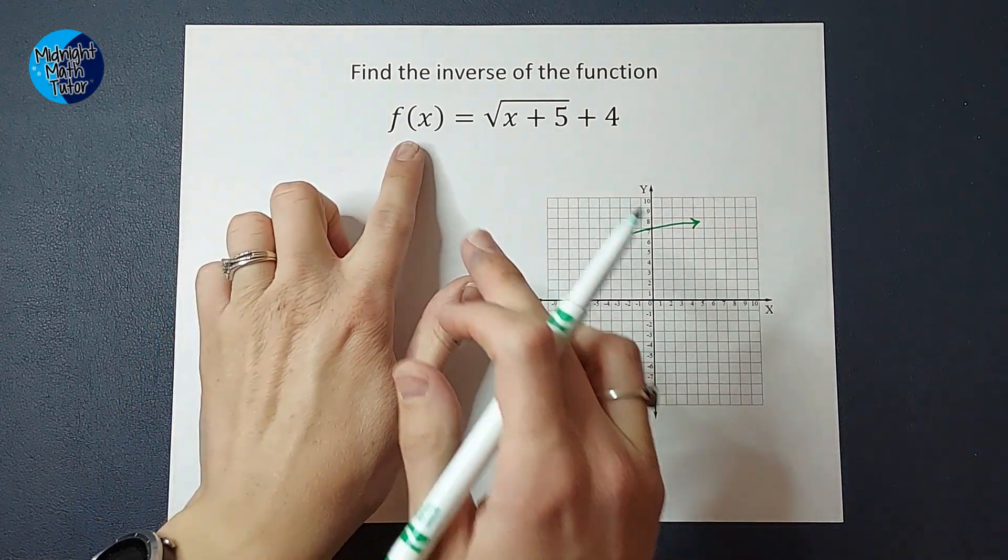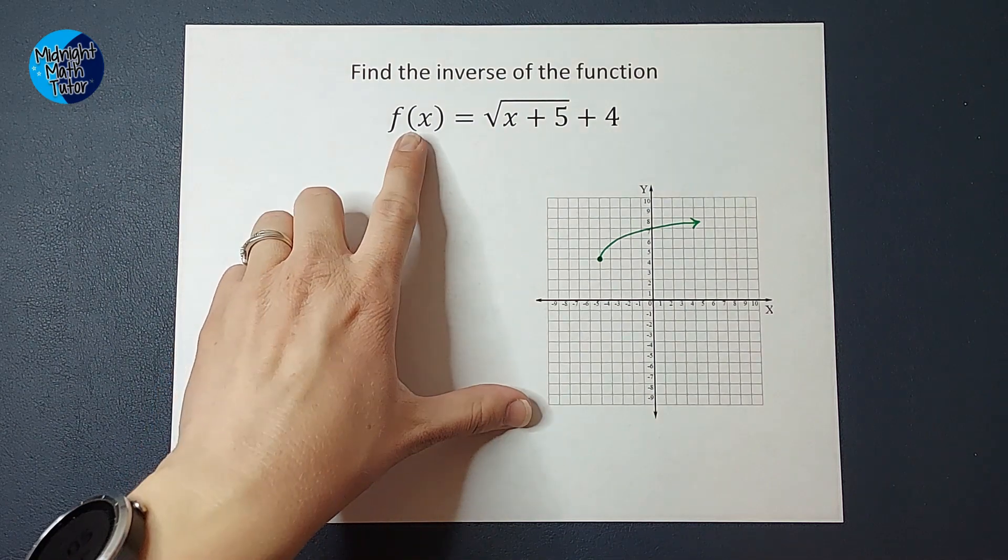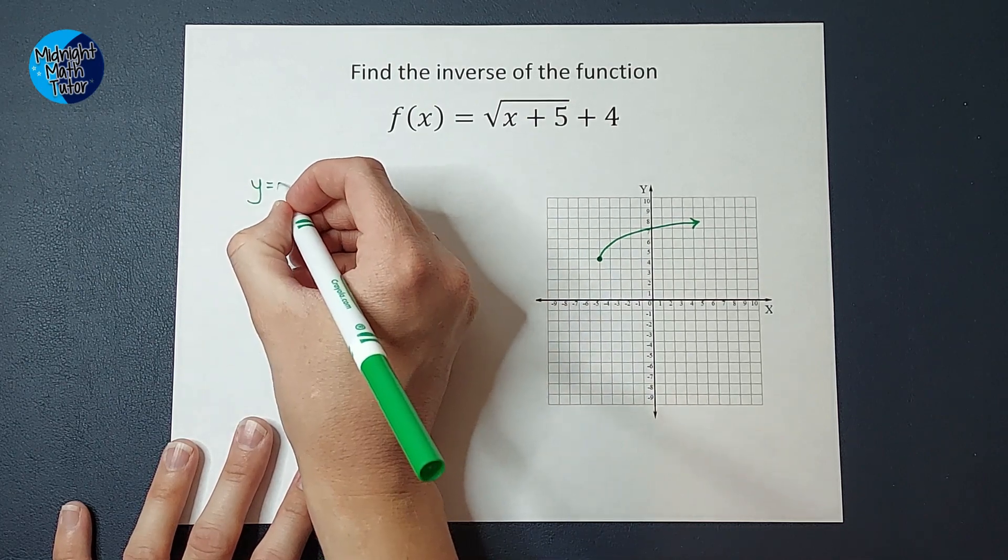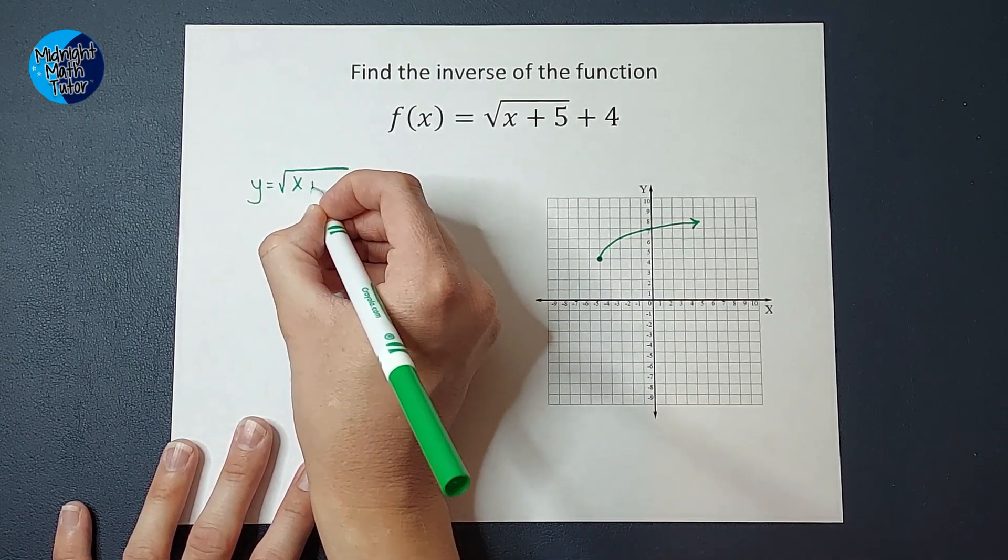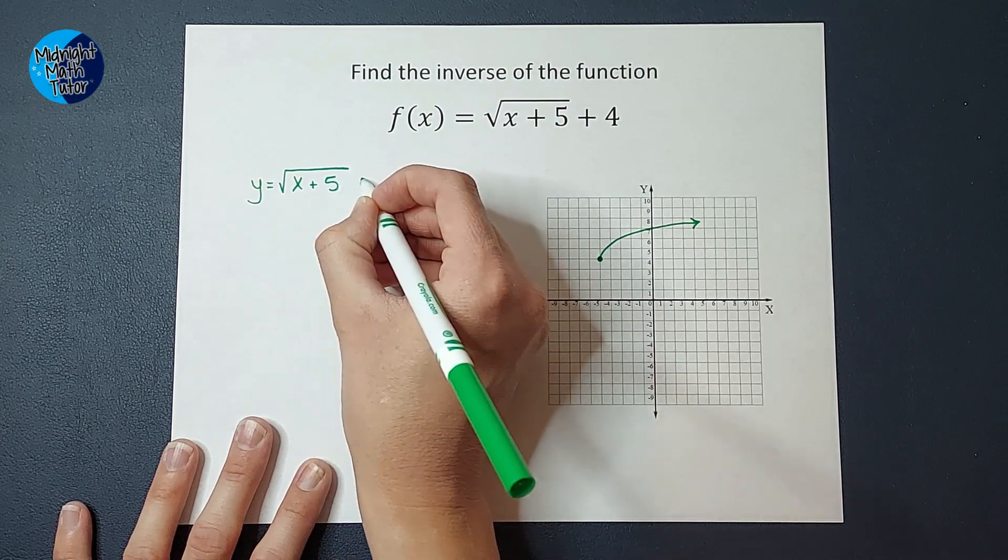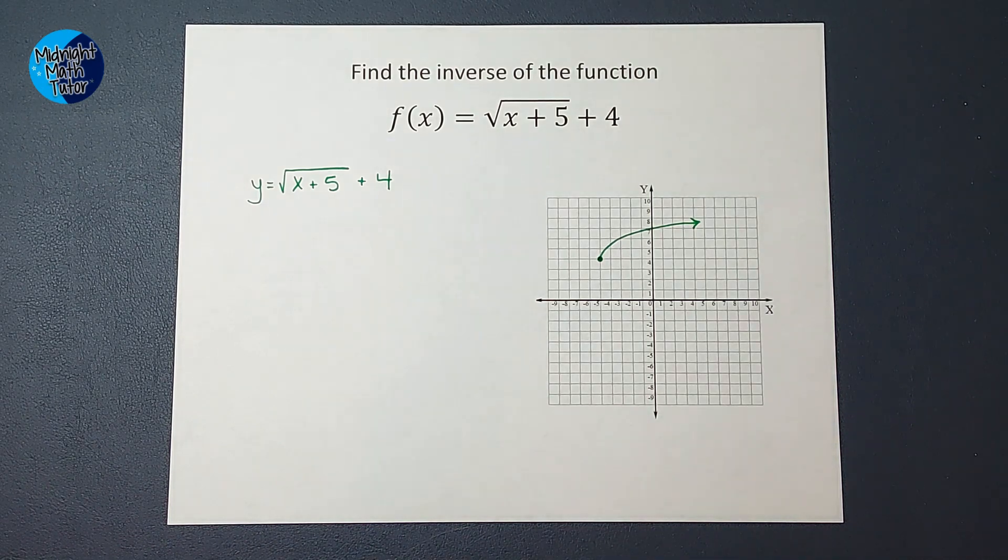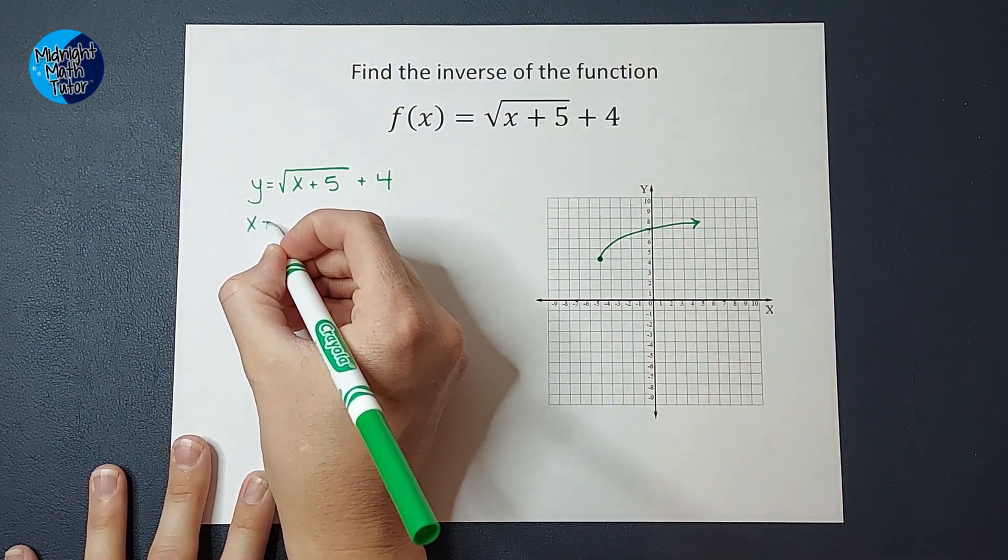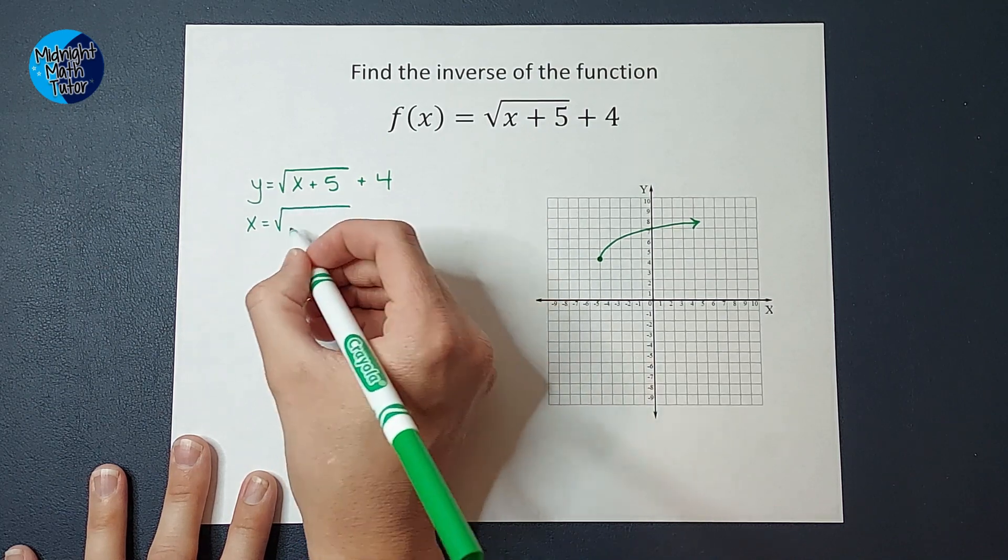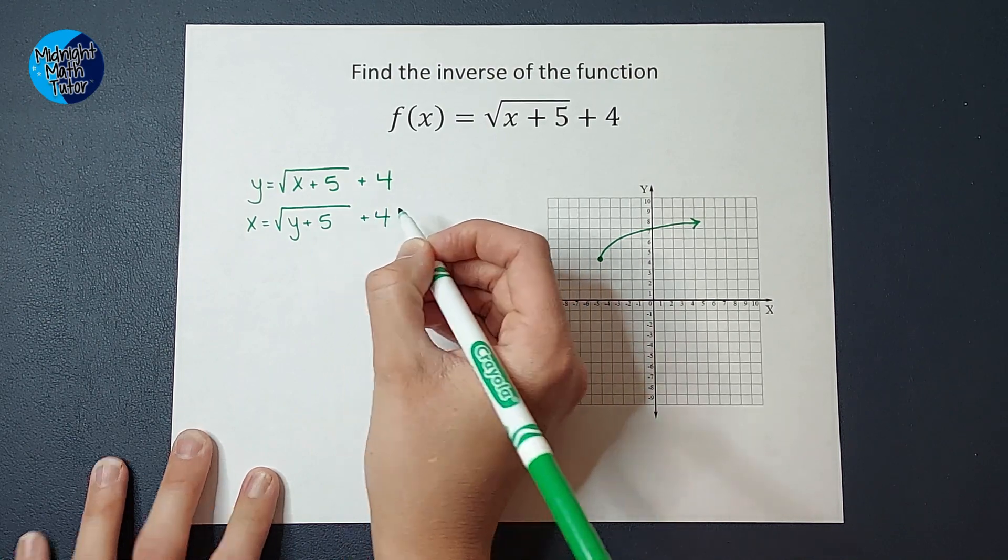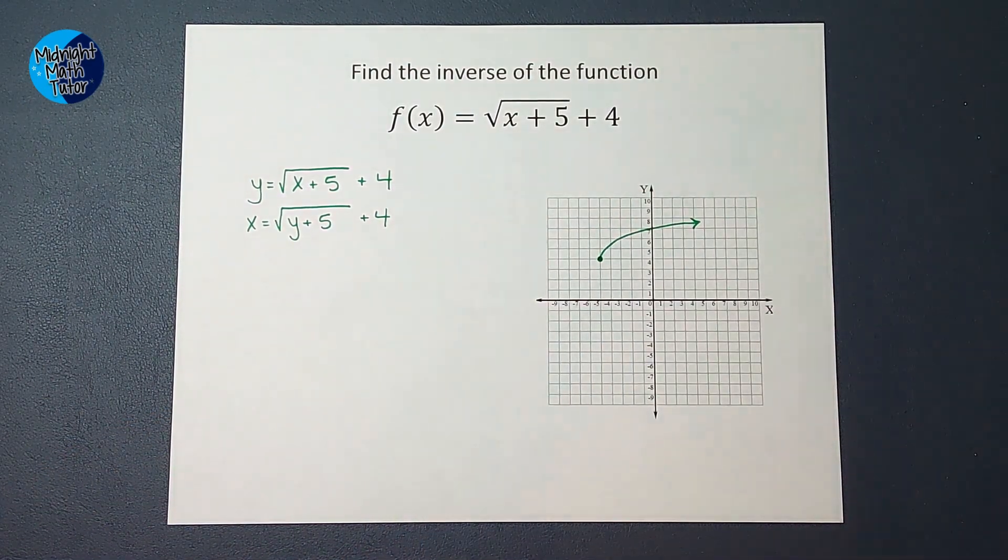From here, to find my inverse, the first step I'm going to do is change this f(x) to a y, just to make our math easier for a second. So I'm going to have y equals the square root of x plus 5 plus 4. The next thing I'm going to do to find this inverse is I'm going to take my x and y variable and swap them. Yes, you heard this right. It is crazy. Crazy things are happening.